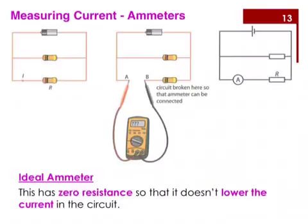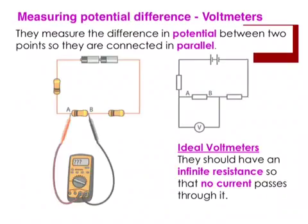We can use an ammeter to measure the current through an electrical circuit component. For example, if we want to measure the current through the component R, we connect the ammeter in series with the resistor R so that current flows through the ammeter and then through the resistor R. An ideal ammeter has no resistance so that it does not lower the current in the circuit. We can use a voltmeter to measure the difference in potential between two points. If we would like to measure the potential difference across a resistor, we connect the voltmeter in parallel to the circuit component between the two points A and B. An ideal voltmeter has infinite resistance so that no current passes through it.